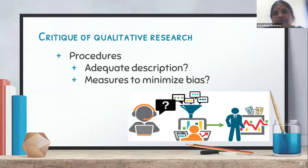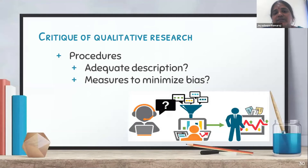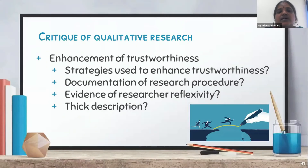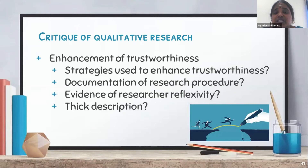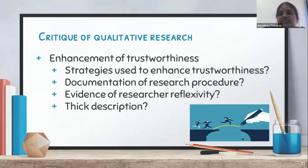Then comes the procedure — whether an adequate description of the procedure is given in the article, and whether measures to minimize bias are explained. Then enhancement of trustworthiness — whether the strategies used to enhance trustworthiness are explained, whether the documentation of research procedure is clearly explained, whether there is evidence of researcher reflexivity, and whether a thick description of the entire research process is given, since qualitative studies mostly rely on how they are described.